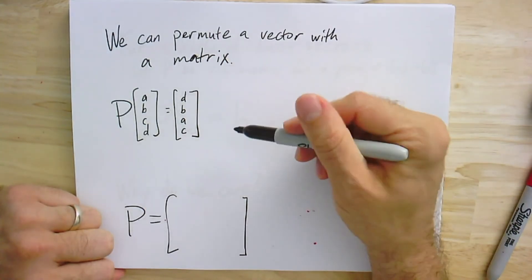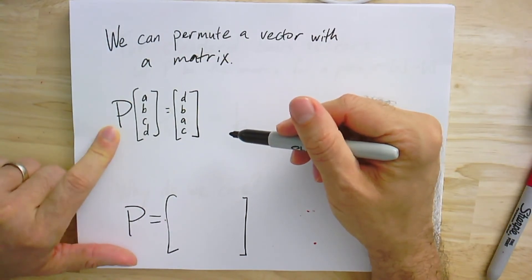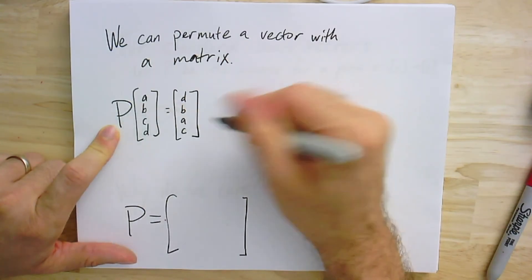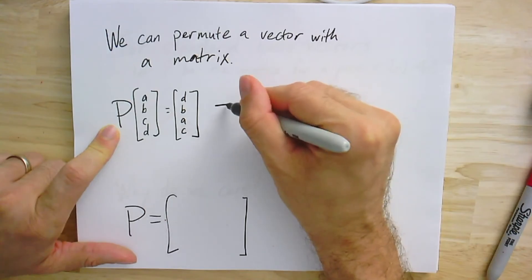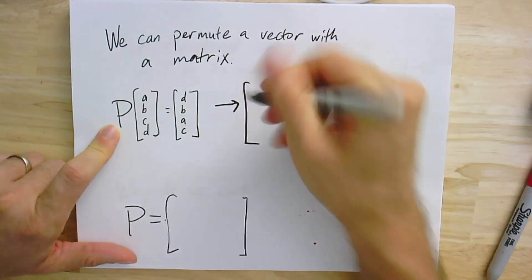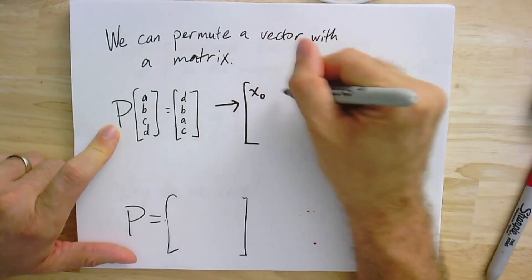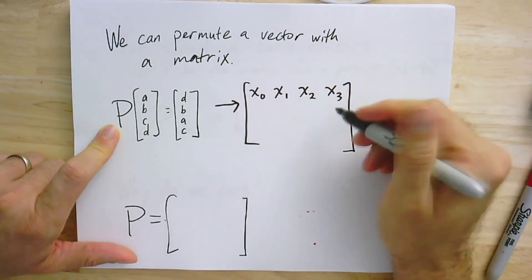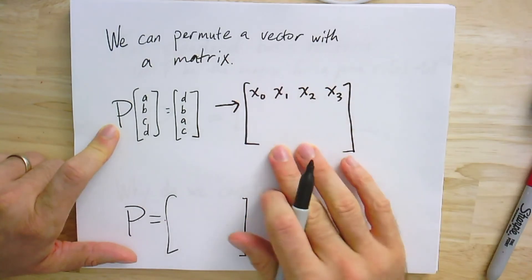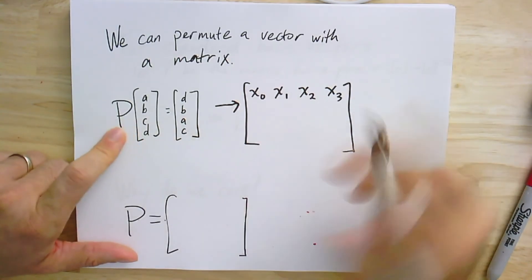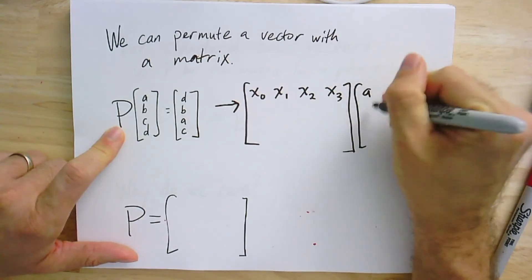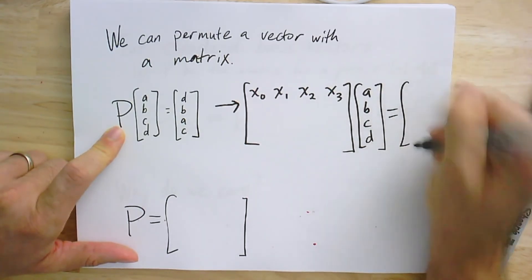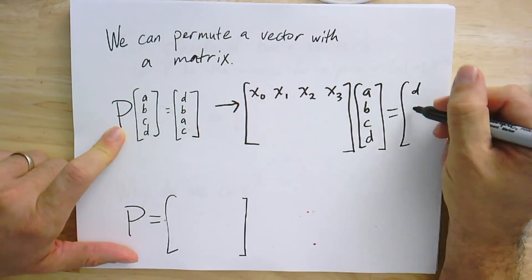If you were to try to figure out what this matrix P was, just by using basic knowledge of matrix-vector multiplication — say, solving some system of linear equations — we'd put in some unknowns, x0, x1, x2, x3. These are the coefficients in some linear equation. There would be 16 of them because this is a 4×4 matrix. We know that the first equation should give us d.